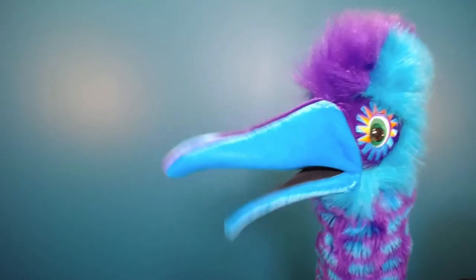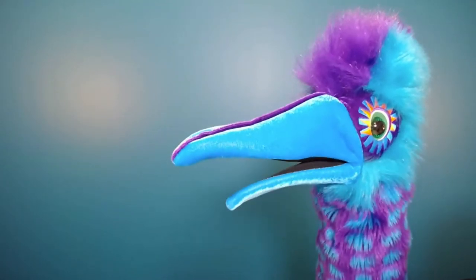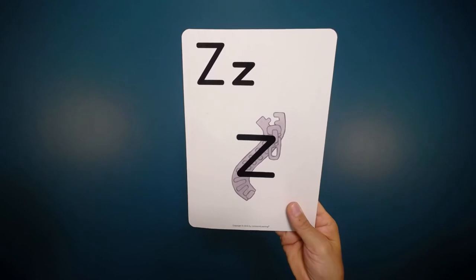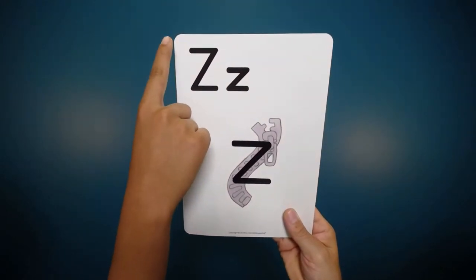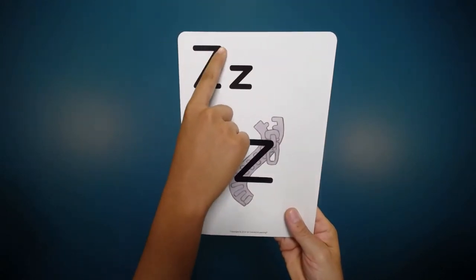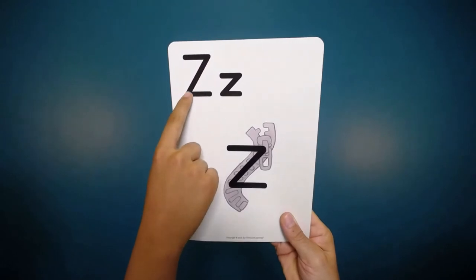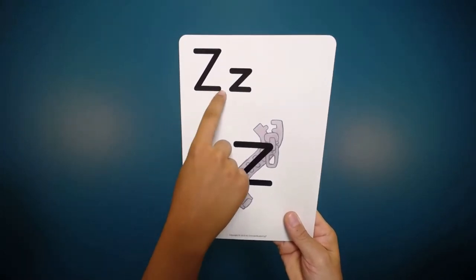Let's try to draw the letter Z. The uppercase Z: little line across, big line down to the left, little line across.